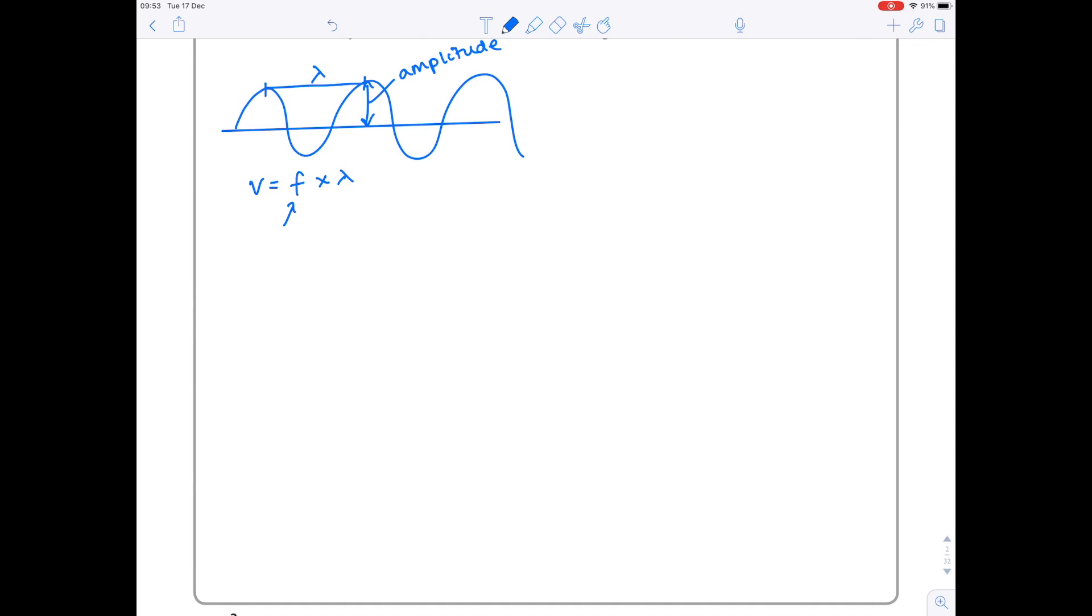I'd show what the amplitude is, I'd show wavelength, I'd write the wave equation which is wave speed equals frequency times wavelength. Remember we need to learn both the transverse and longitudinal wave definitions. With transverse waves, vibrations occur parallel to the direction which the wave is traveling. With longitudinal waves, vibrations occur perpendicular to the direction.